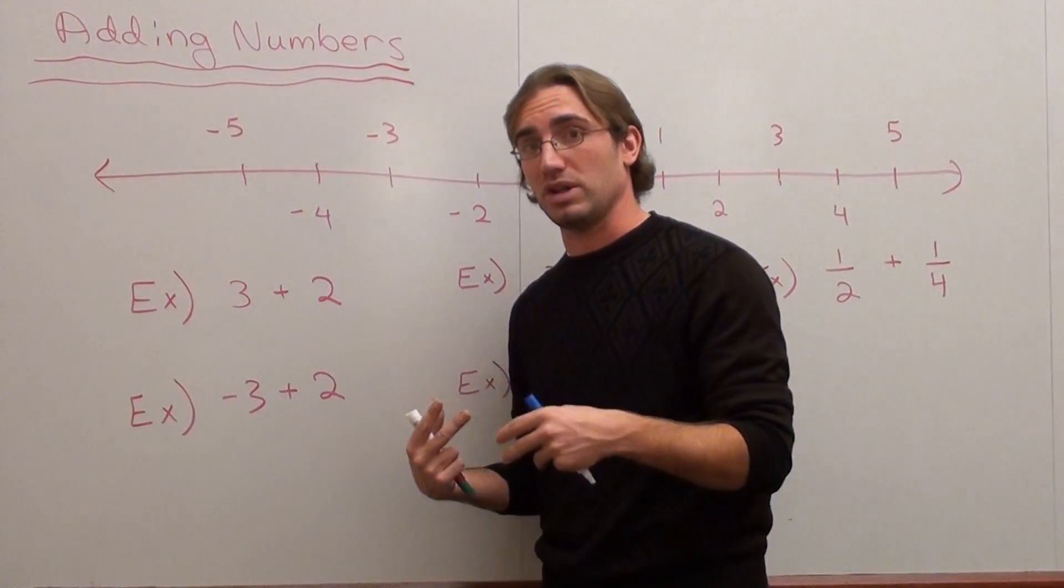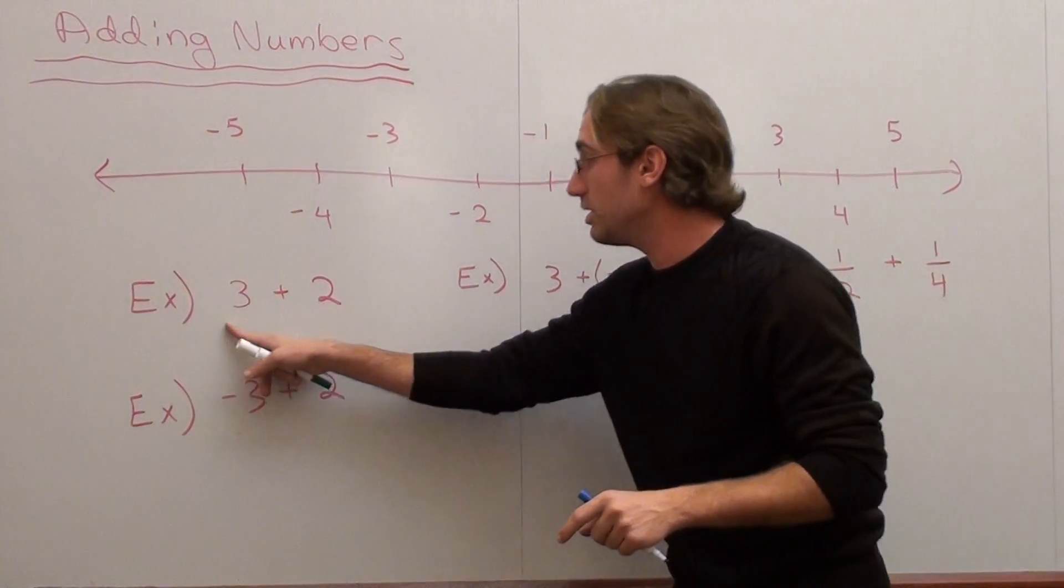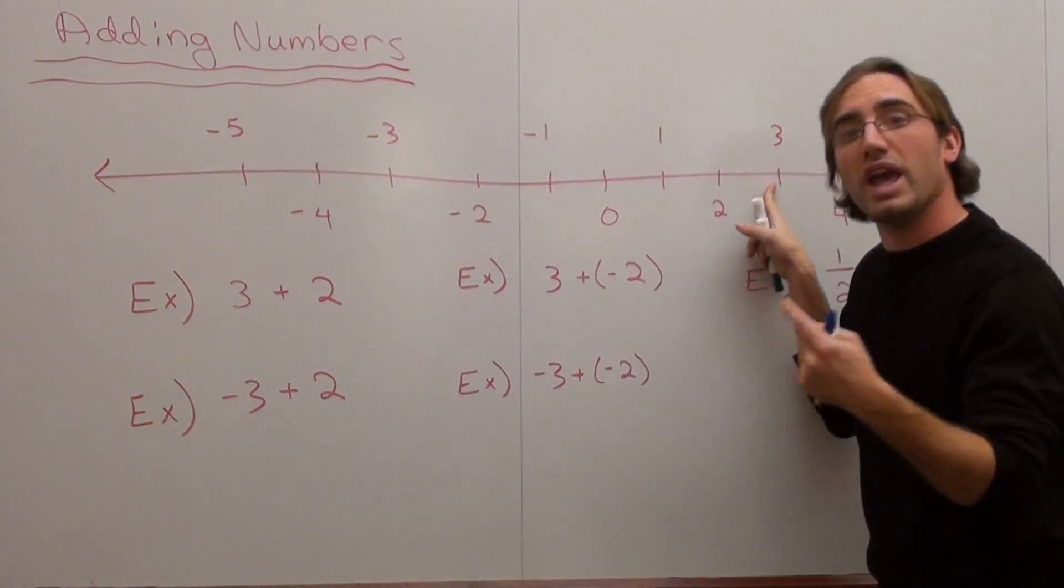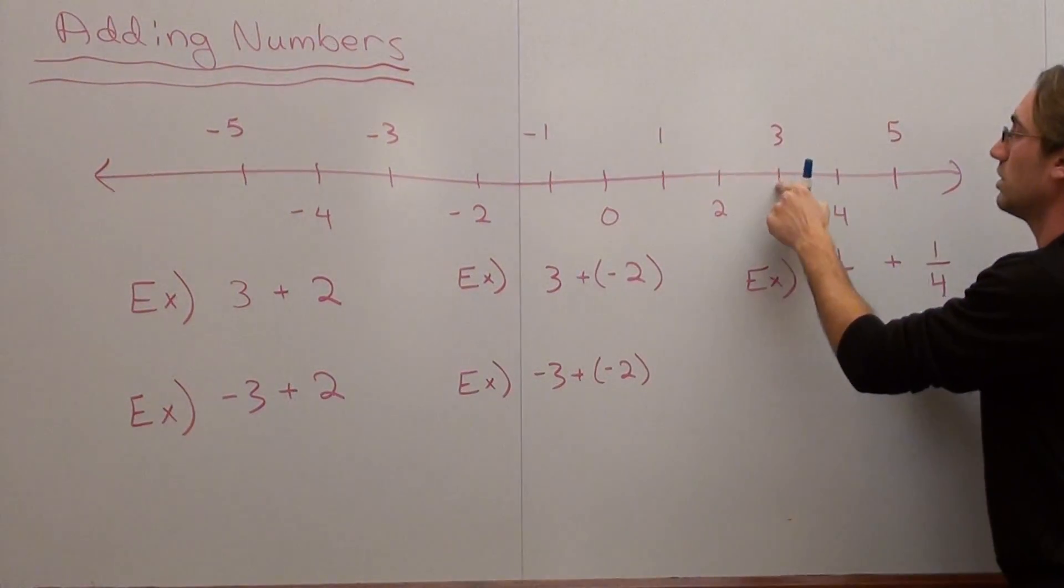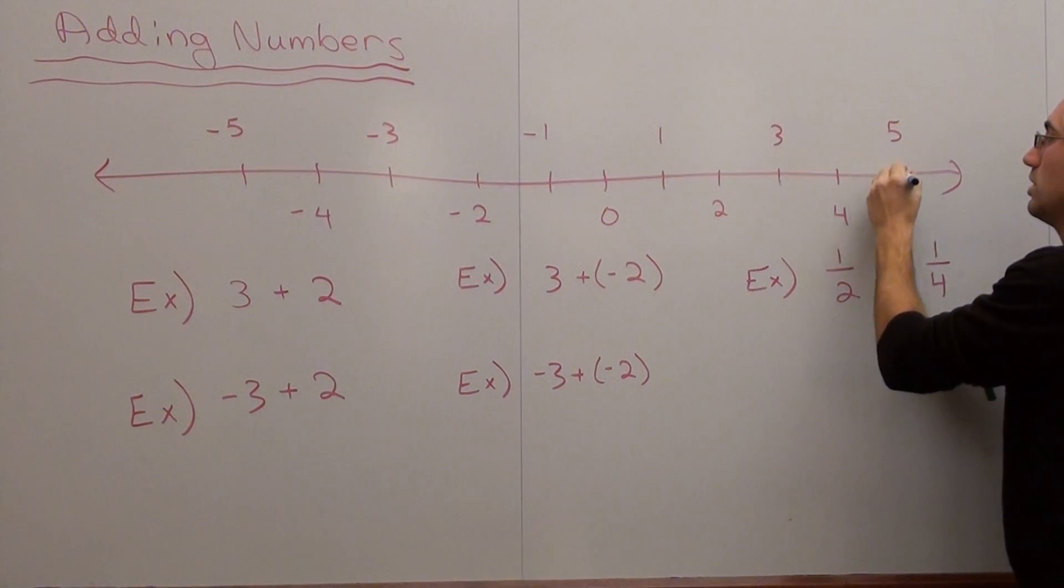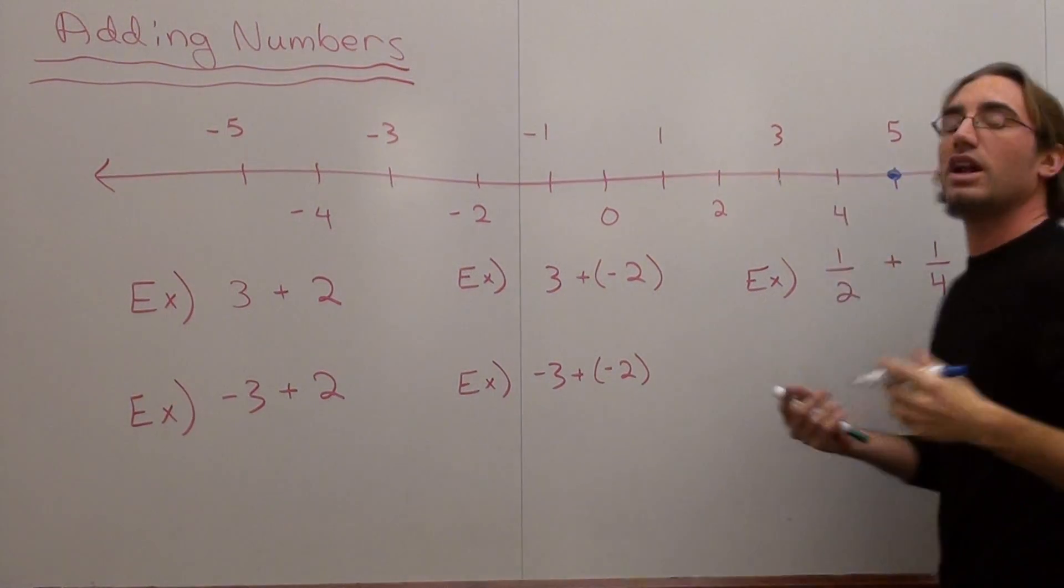On this number line, if we have 3 plus 2, we start at 3 and we add 2, and our answer is 5.